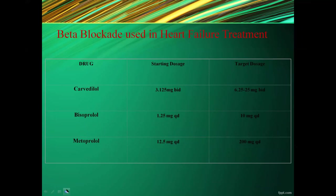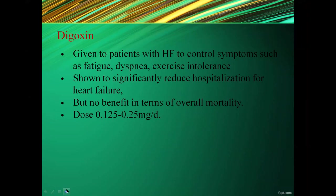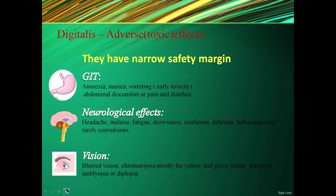Beta blockers used include carvedilol, bisoprolol, and metoprolol. Digoxin is given to patients with heart failure to control symptoms such as fatigue, dyspnea, and exercise intolerance. It significantly reduces hospitalization but has no benefit for overall mortality. Recommended dose: 0.125 to 0.5 mg per day. Adverse effects of digitalis — which has a narrow safety margin — include arrhythmias, GI symptoms (anorexia, nausea, vomiting, abdominal discomfort, diarrhea), neurological effects (headache, fatigue, dizziness, confusion, delirium, hallucinations), and visual disturbances including blurred vision, chromatopsia (yellow-green vision), and transient diplopia.